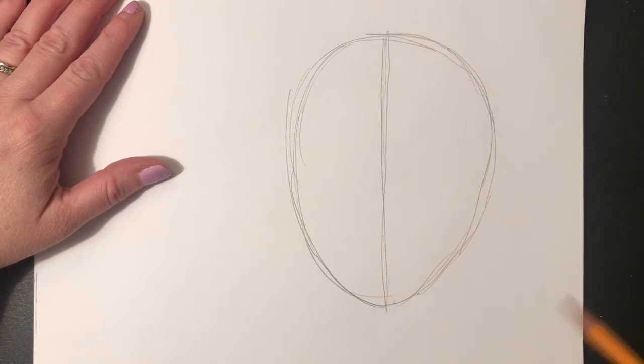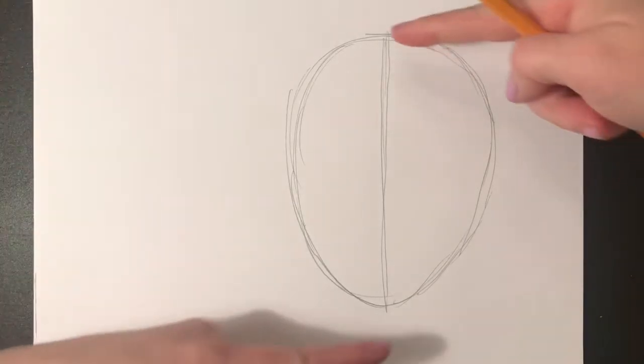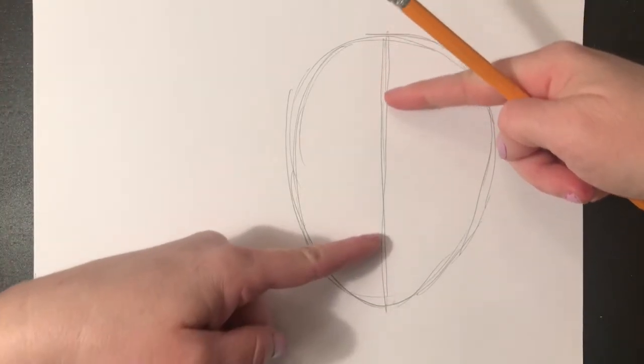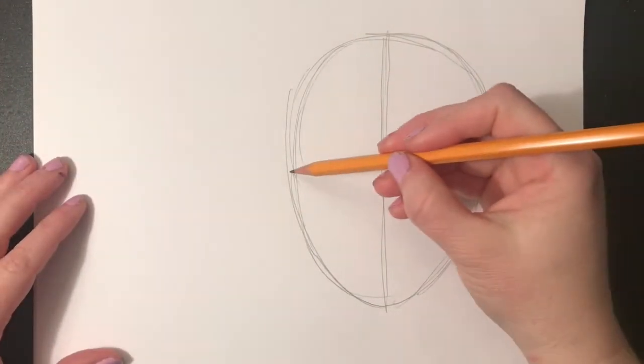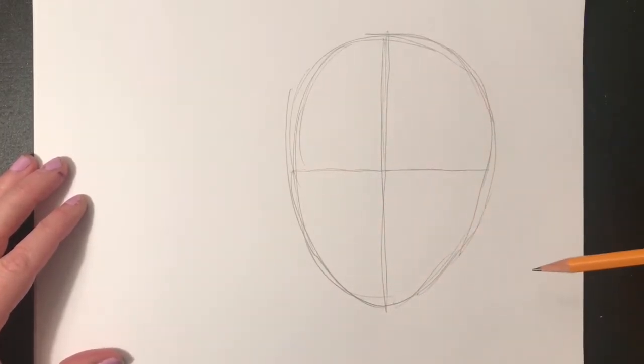To begin, we're gonna draw an egg shape for the head. You'll notice I've already done this and I've divided the head in half from top to bottom. About halfway down from top to bottom, I'm gonna put a line that goes horizontally, and this is going to help me place the eyes in the proper place on the head.